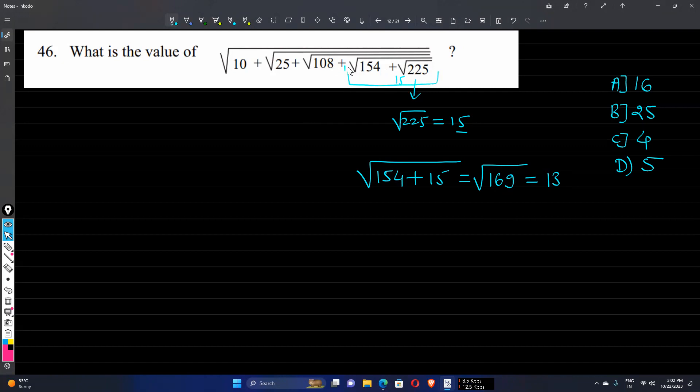Then we need to solve 108 plus 13, which equals √121, which is equal to 11, since 121 is the square of 11. So we can write 11 instead of √121.